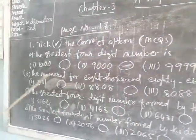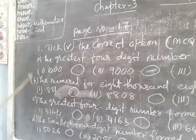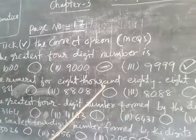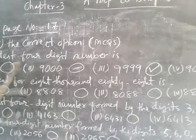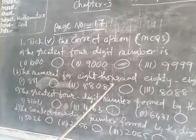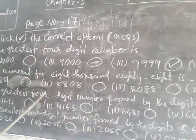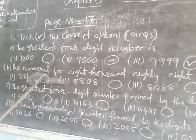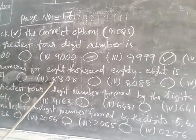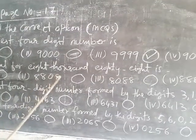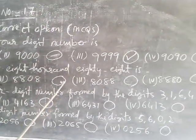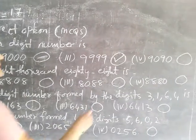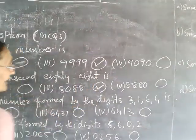Then question one B: the numeral for eight thousand and eighty-eight. Which one is eight thousand and eighty-eight? Is it eight thousand and eighty-one? Wrong. Is it eight thousand and eighty-eight? Yes, it is right. So you put the tick for question one in the third option.